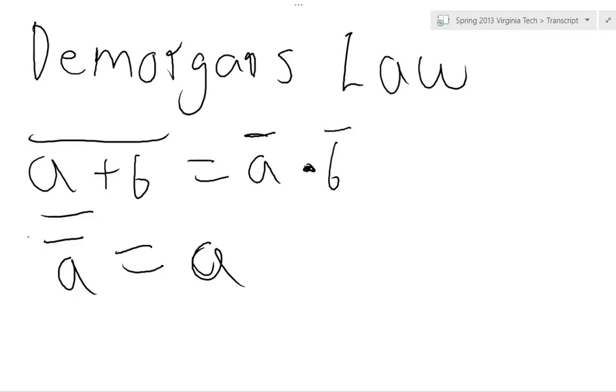So double negations really don't do much, but they can come up. Also you could have a triple negation, which would be equal to, since it's an odd number of negations, would be equal to a-not. And that's about it.